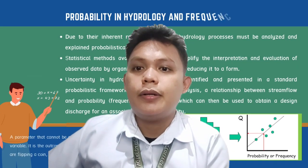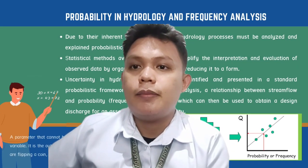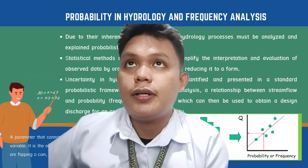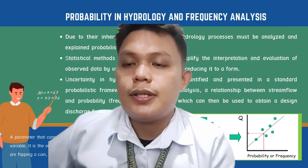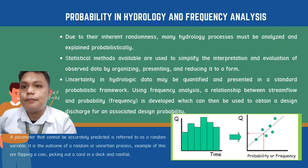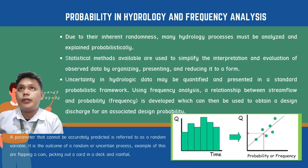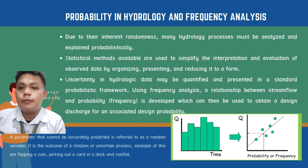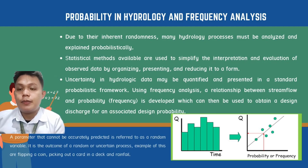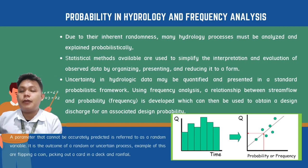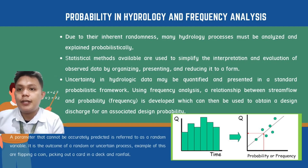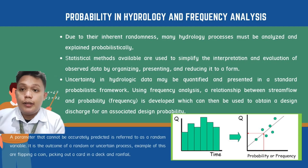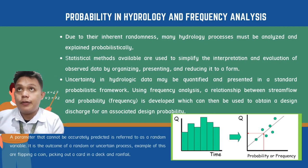Due to their inherent randomness, hydrologic processes must be analyzed and explained probabilistically, since we do not know when or where rainfall will occur at any period of time. Statistical methods are used to simplify the interpretation and evaluation of observed data by organizing, presenting, and summarizing it.